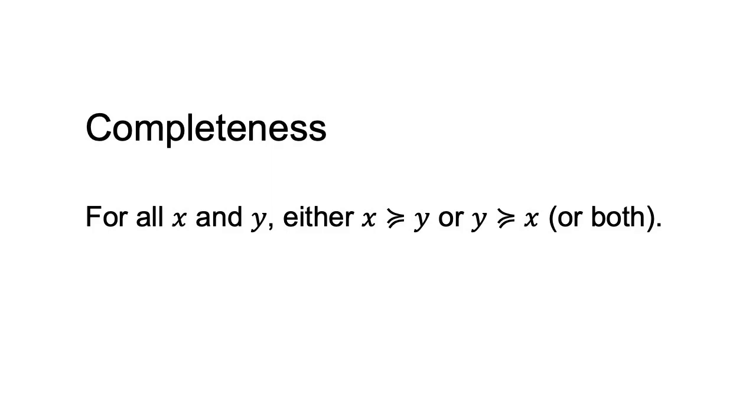While the completeness axiom appears sensible, it is possible to develop examples where it may not hold. Consider a choice between two possible holiday destinations, or two potential dates or spouses. If you are torn between the options and unable to make up your mind, this would represent a breach of the completeness axiom.